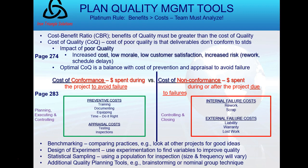Cost-benefit analysis is really a financial analysis to estimate the strengths and weaknesses of alternatives. Less rework, higher productivity, lower costs, increased customer satisfaction, and increased profitability are all good outcomes — these are what the customer is after. Cost-benefit analysis for each quality activity compares the cost of the quality step to its expected benefit.